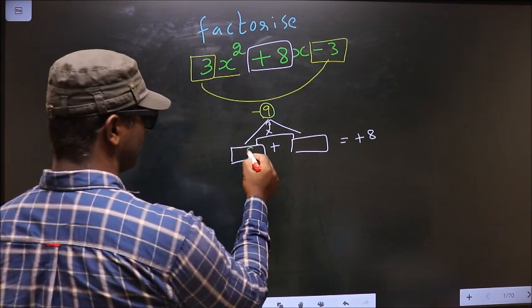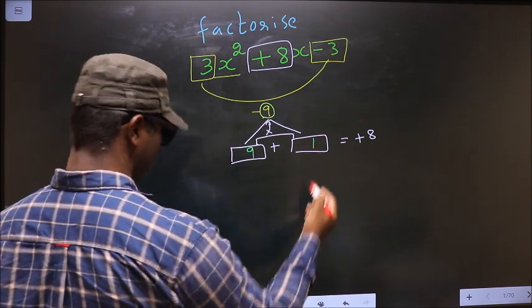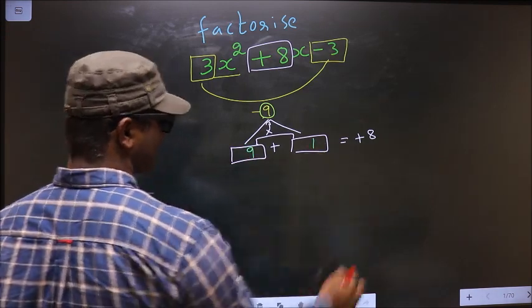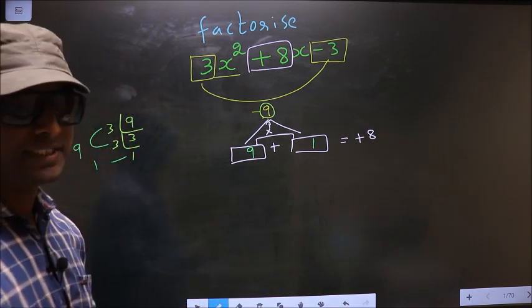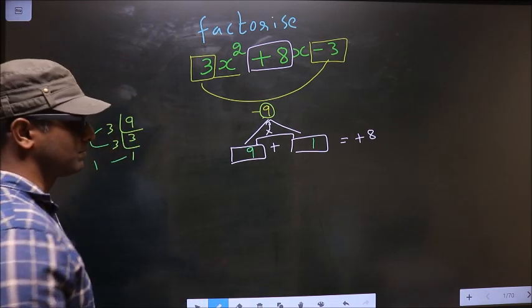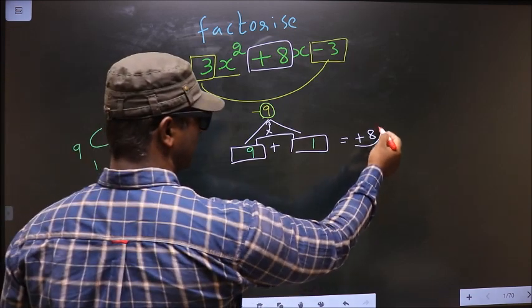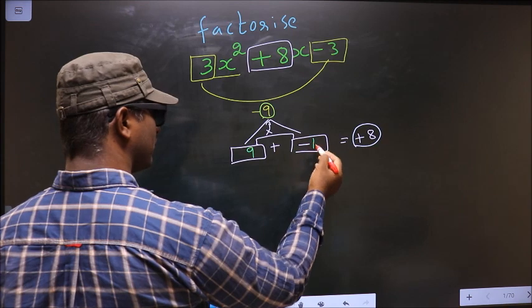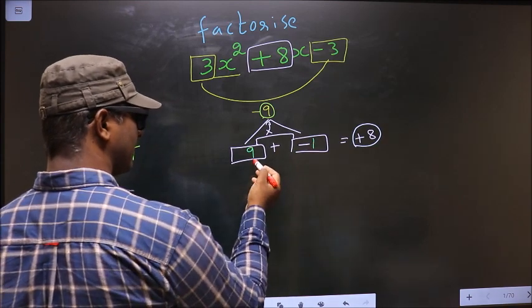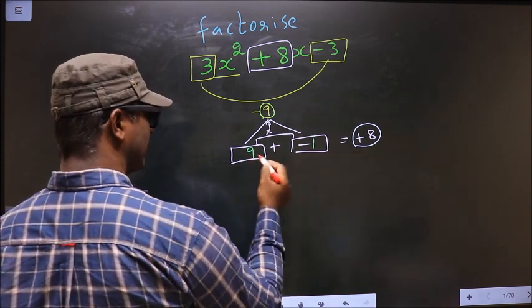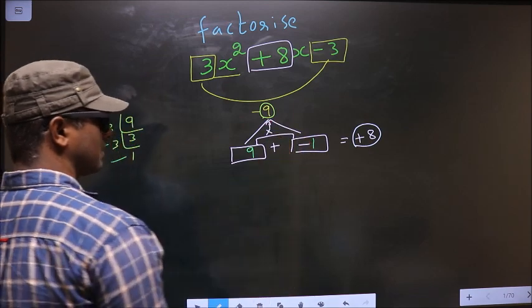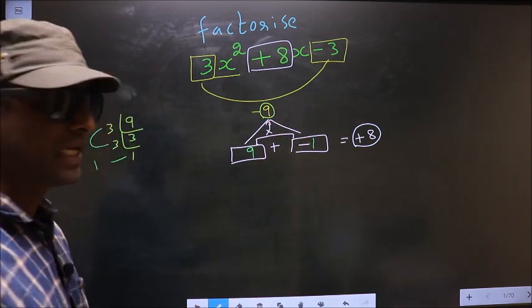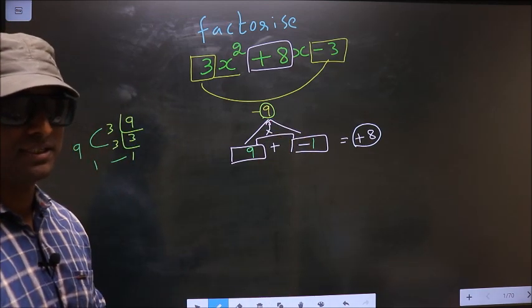So now, here you write 9 and here you write 1. Now, we should adjust the signs. What I mean is, here to get plus 8, I should put negative before 1, such that 9 minus 1 is plus 8, 9 into minus 1 is minus 9. So now, we have adjusted even the signs also.